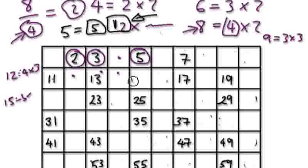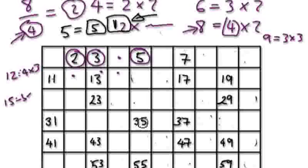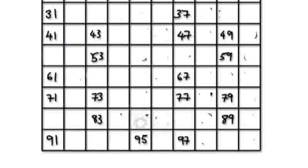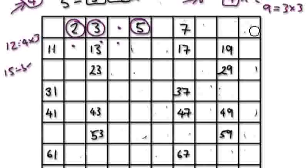Continuing with multiples of 5: 15 has already gone, 20 has already gone. But 35 — that can go. 55 here, that can go. 65, that can go. 85, that can go. 95, that can go. All the 10s, 20s, 30s — they've already gone.